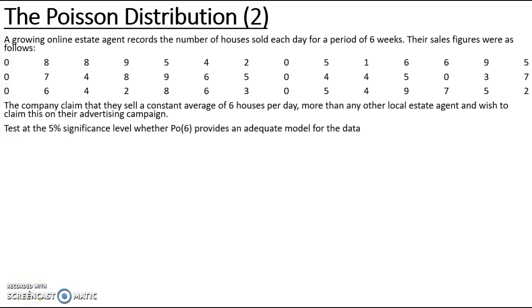In this example we are going to look at how to use the chi-squared distribution to test the goodness of fit of the Poisson distribution. This is the second example of the Poisson distribution where the data is presented in a different way.